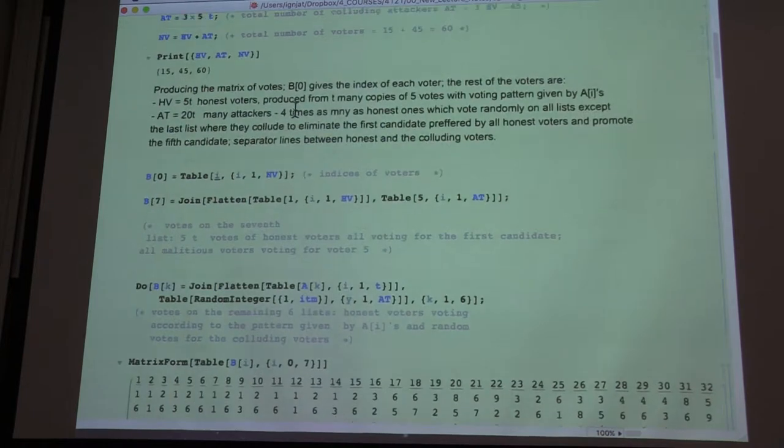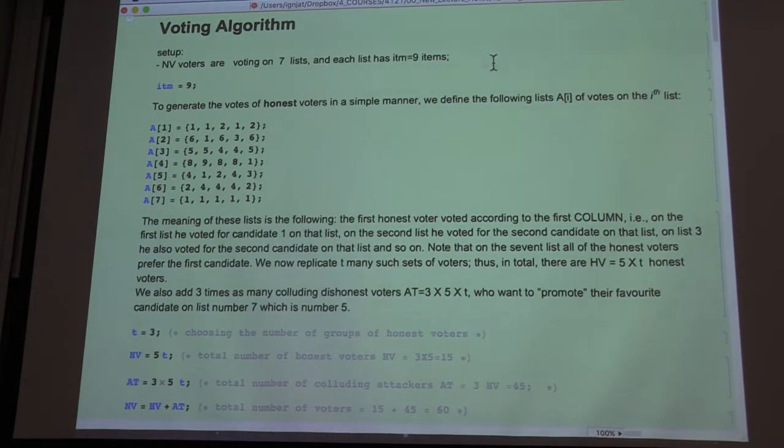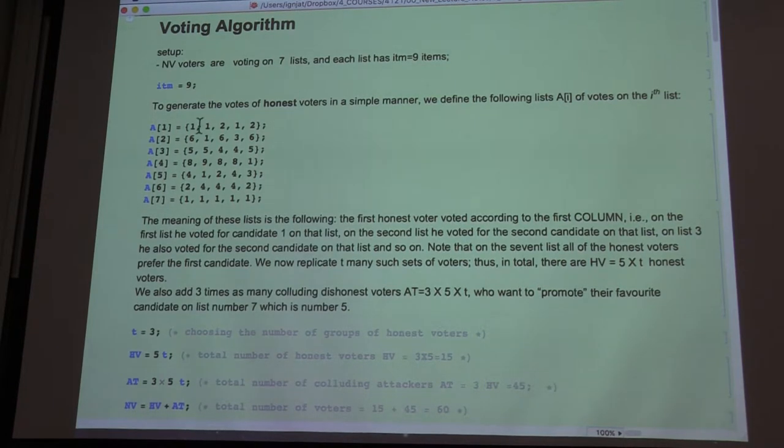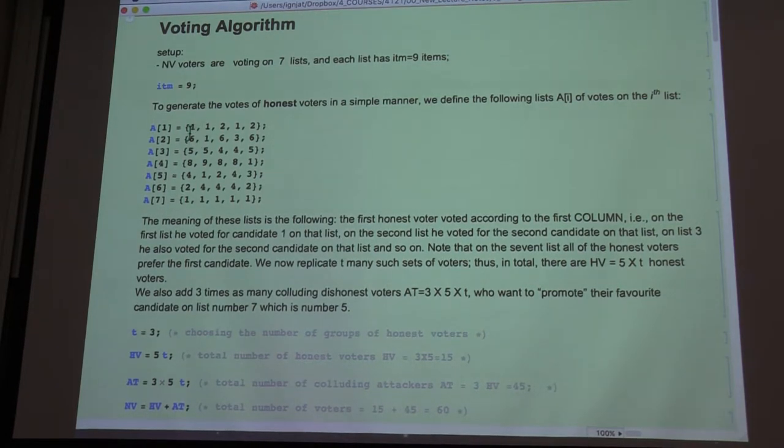Let me just quickly remind you. So we generate voting lists. Each list is given by these variables A1 up to A7, and the numbers are the candidates for whom the voter that corresponds to the column has voted.